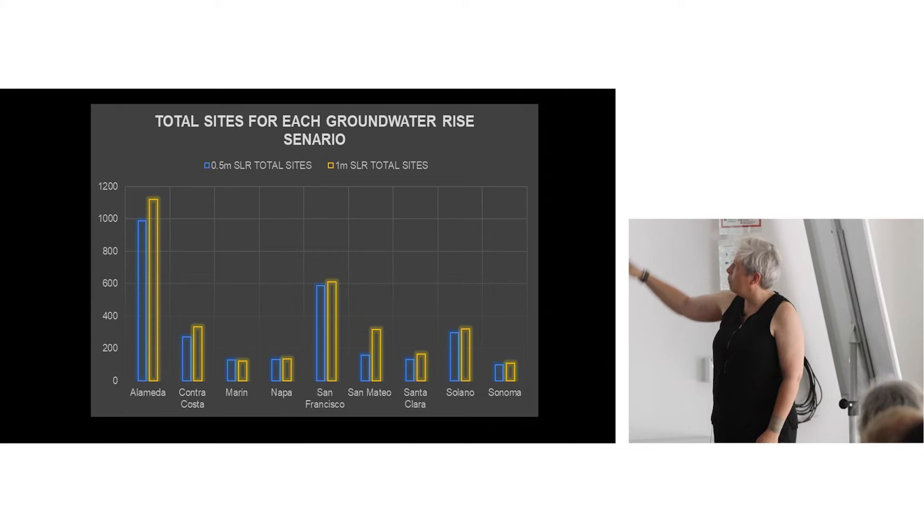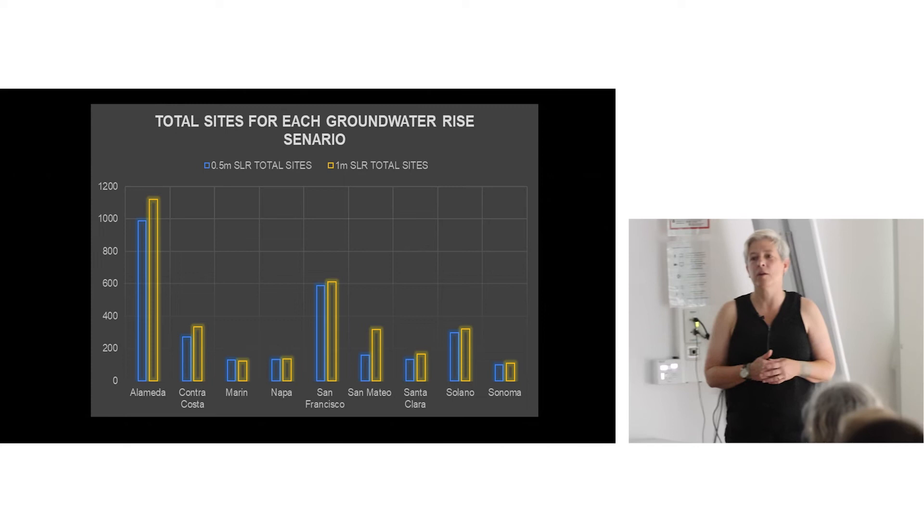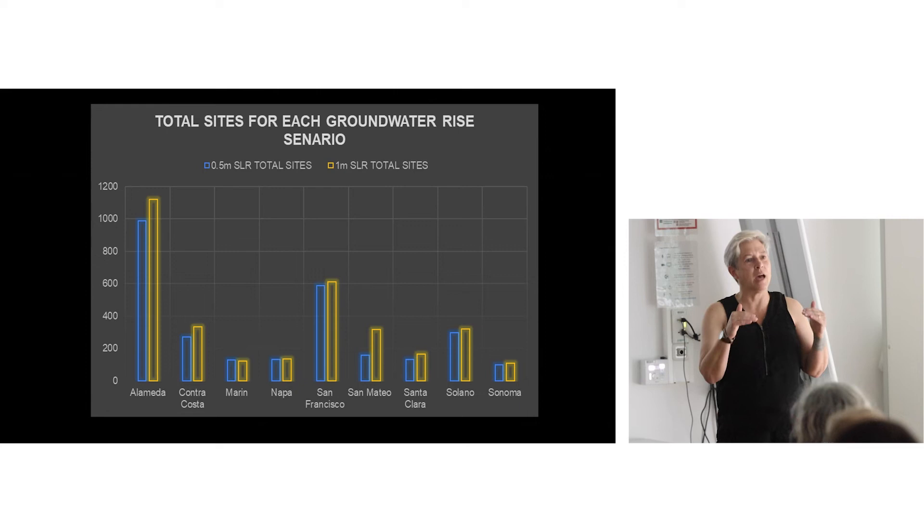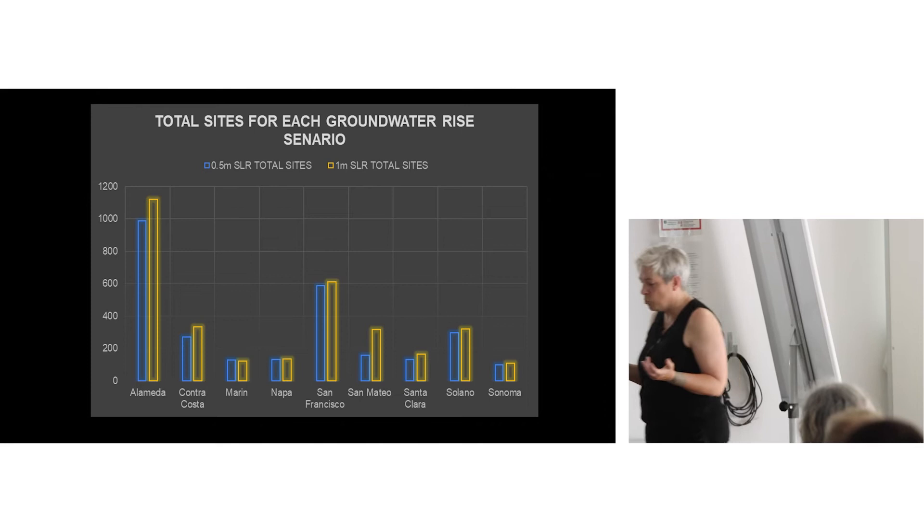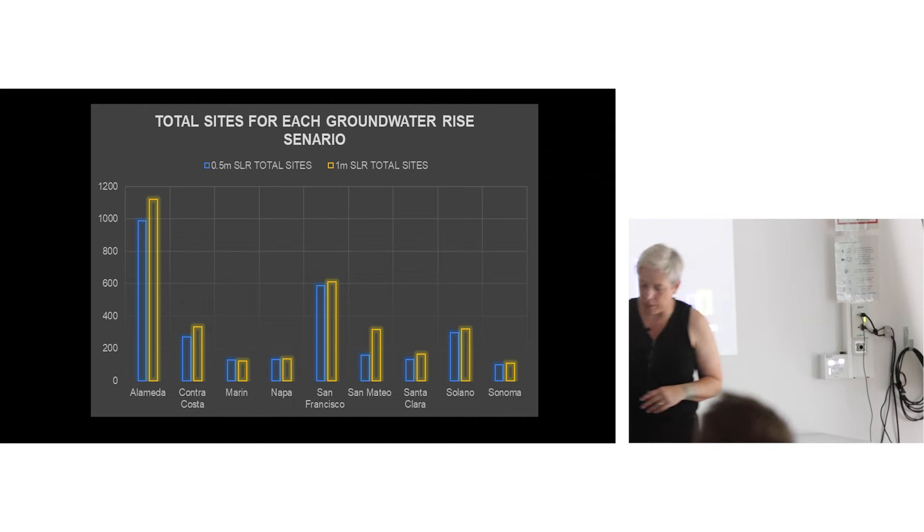What's interesting in the data was with half a meter of sea level rise, most of those sites are affected. Remember, 2060 is the year the state is asking us to think about as the latest time when sea level might reach half a meter higher than it is now. So this is the 2060 condition in the blue, where I think it's 2500 sites could be affected. That means the health of the San Francisco Bay is at stake. And it means the health of the people who live around the Bay is at stake.